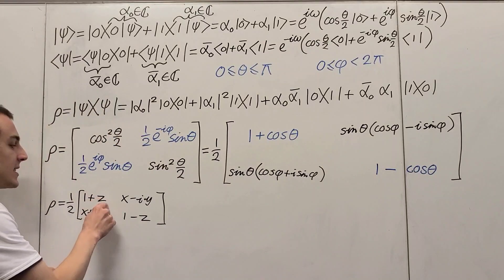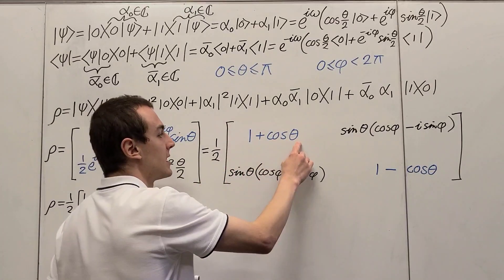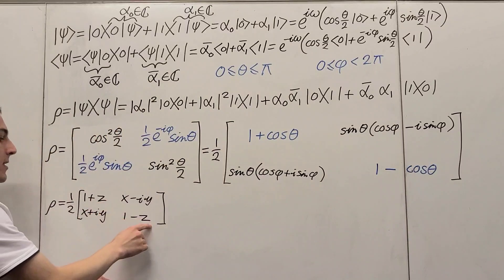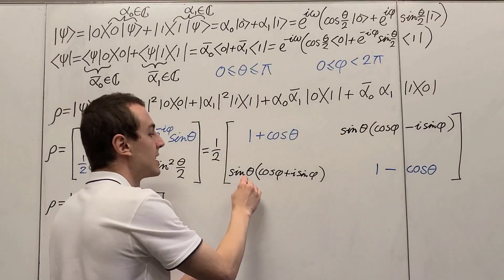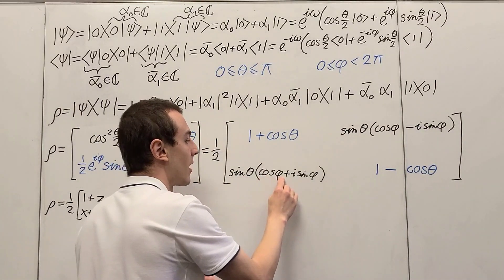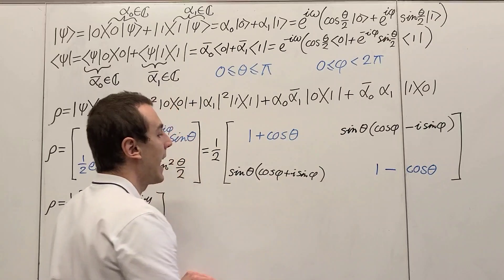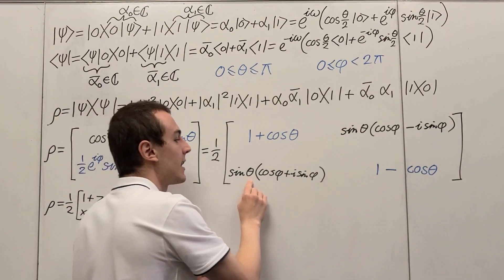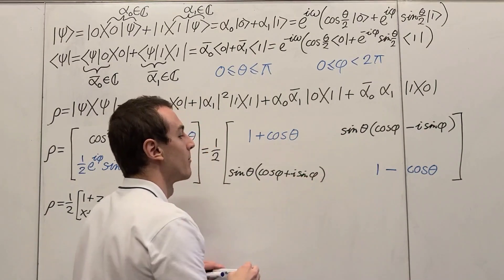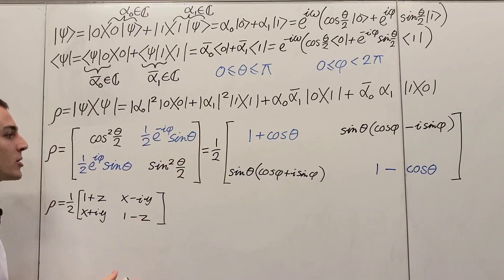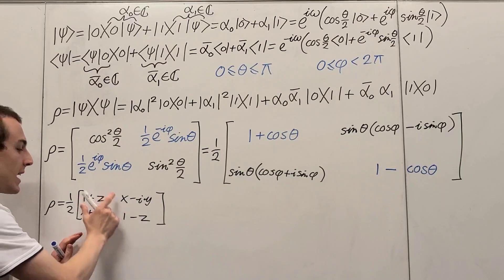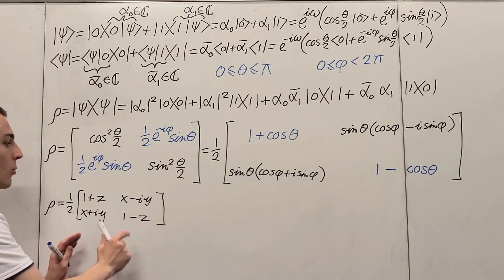So z is the same as cosine of theta, x is the same as sine theta times cosine phi, and y is the same as sine theta times sine phi. This is actually a parameterization for spherical coordinates. When we put it in this form, we can clearly see what's going on and we can decompose this matrix in terms of the Pauli matrices.